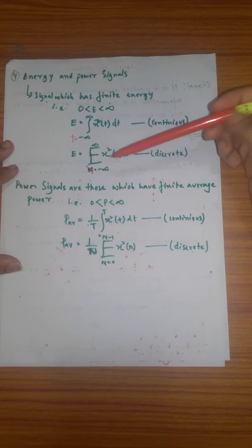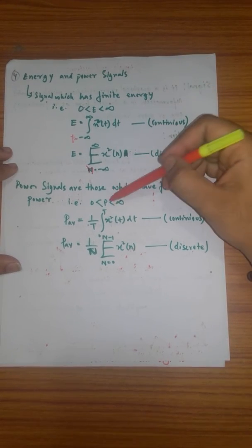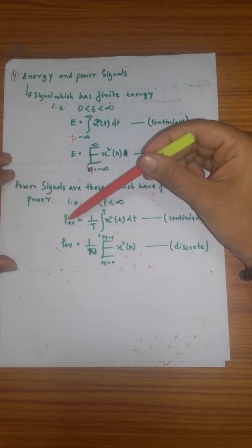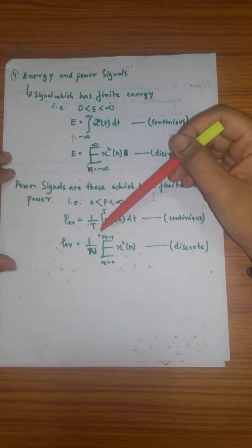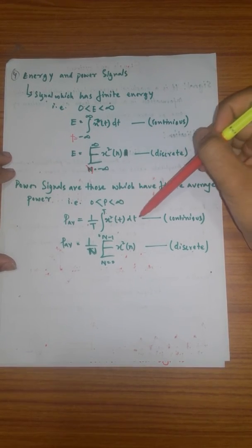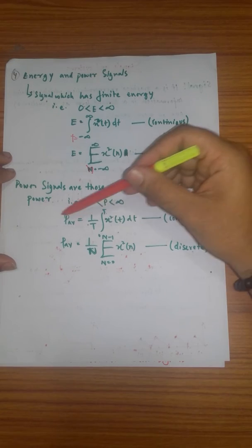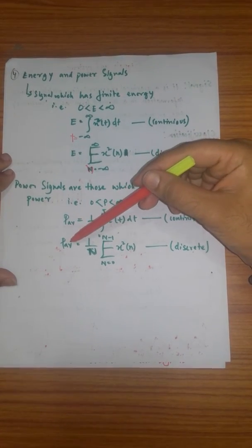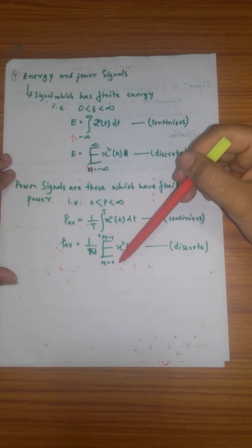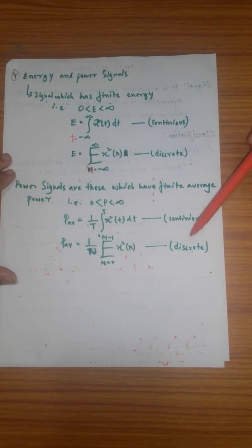Power signals are those which have finite average power. For a continuous signal x(t), the average power is given by: P_average equals (1/T) times the integral from 0 to T of x²(t) dt. For a discrete signal, P_average equals (1/N) times the summation from n equals 0 to N minus 1 of x²(n).